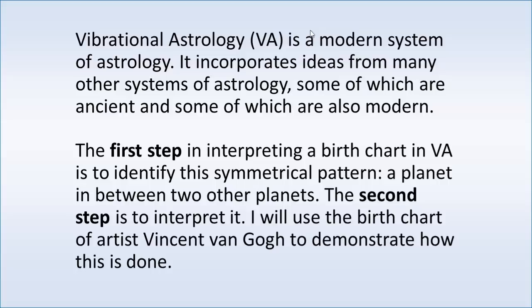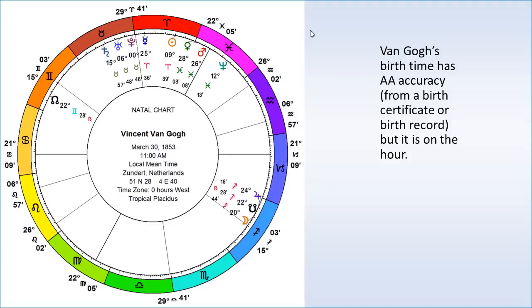I want to dig into how we interpret the chart. The first step — the very first thing we do — is we find a particular symmetrical pattern. It's a pattern where one planet is in between two others. The second thing we're going to do after we find it is to interpret it. Here's the birth chart of Vincent van Gogh, the famous artist.